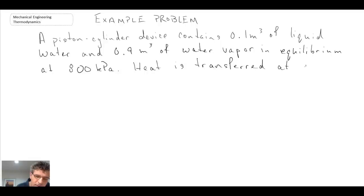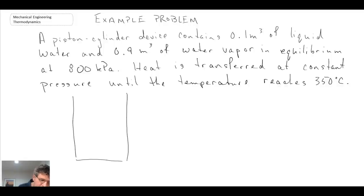Heat is transferred at constant pressure until the temperature reaches 350 degrees C. A schematic of what we're looking at is a piston cylinder device whereby the piston is free to move up or down depending upon the pressure within the system. We have water in both the vapor and liquid state at 800 kPa, with some in the liquid state and the rest as a vapor.